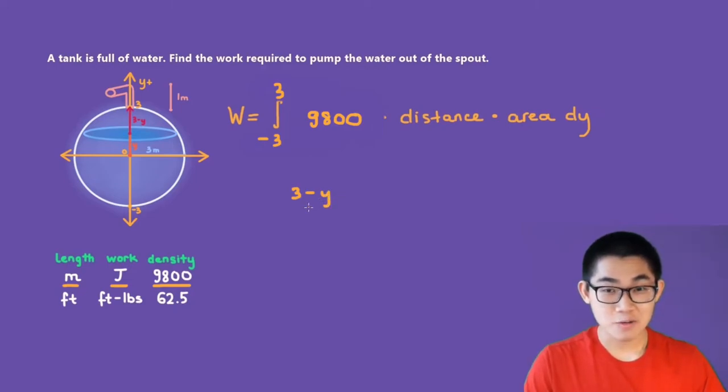But don't forget, we're also moving it outside of the spout. So we have to move it out of the spout. And we know that the height of the spout is one meter, so we have to plus one. And this is the same as four minus Y.